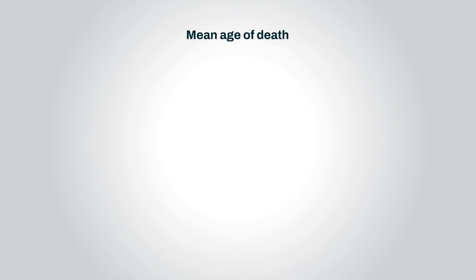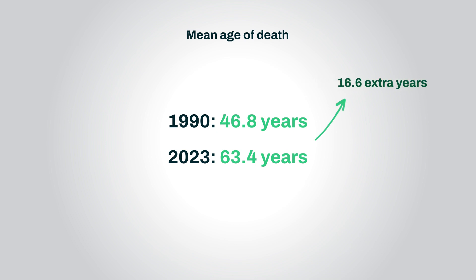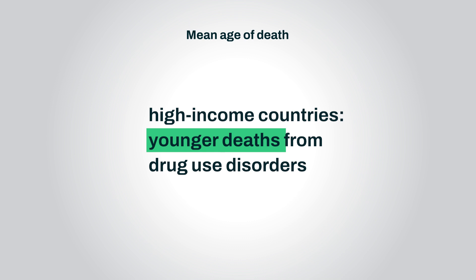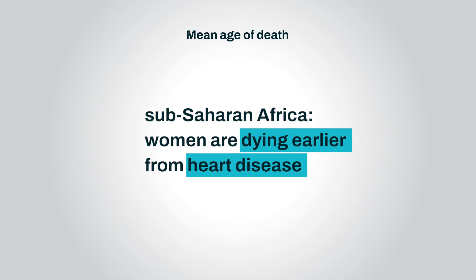Back in 1990, the global all-cause mean age of death was just 46.8 years old. That leapt to 63.4 in 2023 — an incredible 16.6 extra years of life on average in just over three decades. In high-income countries, people are dying from drug use disorders at a much younger age than you'd expect. Meanwhile, in sub-Saharan Africa, women are dying from heart disease 3.4 years younger than expected.